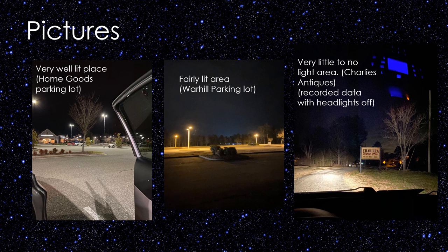These are the pictures. On the very right is the little to no light area — data was recorded with headlights off. The middle picture is the fairly lit area, and as you can see, it only has a couple of lights. The far left one is the very well lit area, and as you can see, it has a lot of lighting.